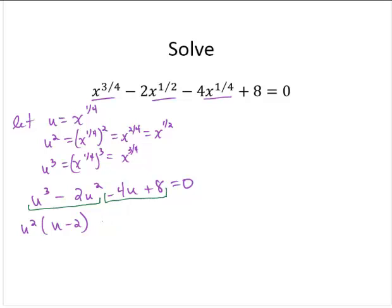And so then, this factors as u minus 2 by u squared minus 4 is 0.